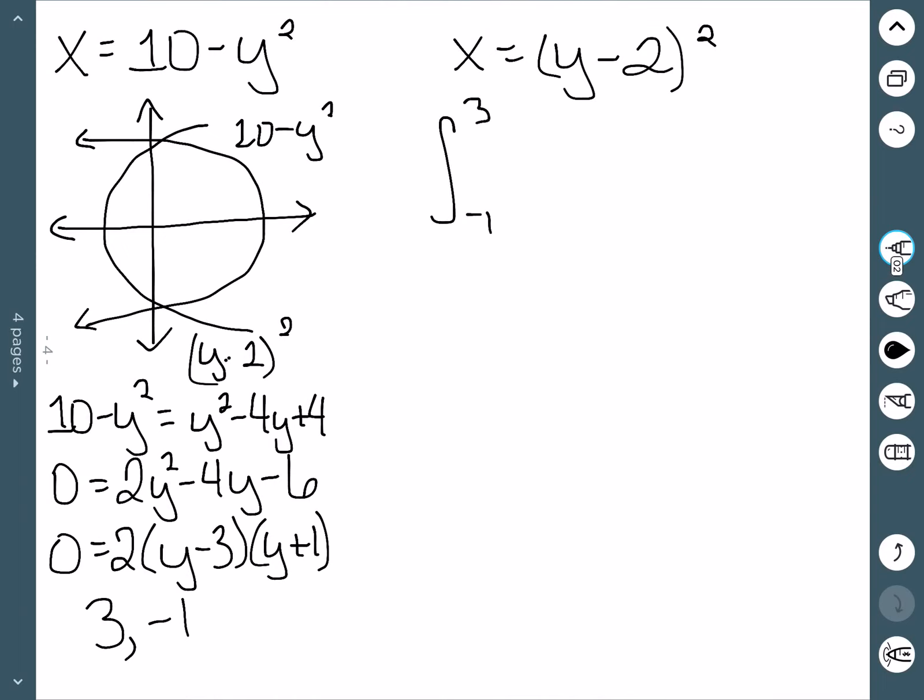The one on the right is the 10-y². Minus, and once again, we do want to keep this multiplied out. So this was y²-4y+4 dy. Once I distribute my negative signs, I end up with 6-2y²+4y dy.